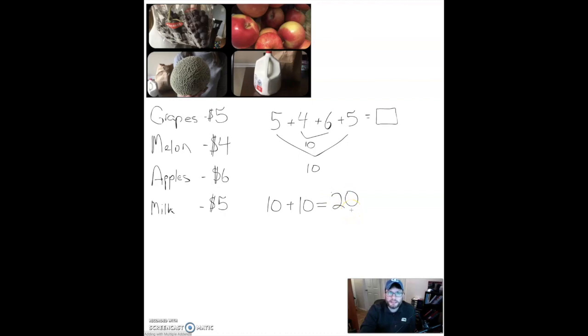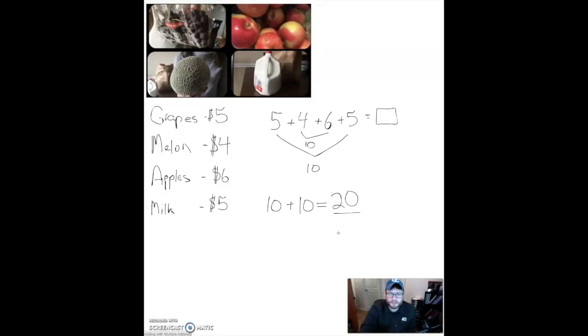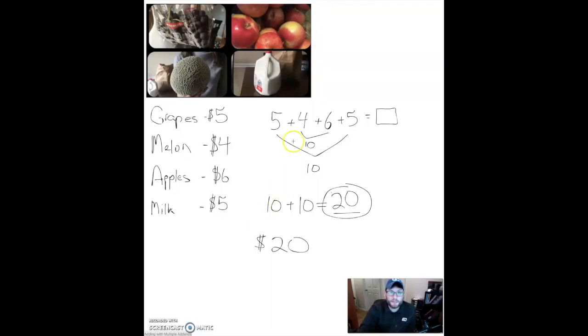So what question did this answer? How much money do I need to take in order to pay for my food? What unit do I want to use here? Twenty grapes? No. Twenty apples? No. The five was five dollars, four dollars, six dollars, five dollars — so my unit will be twenty dollars. I was able to find the total by making combinations: five and five made ten, four and six made ten, and then I added those pieces together.